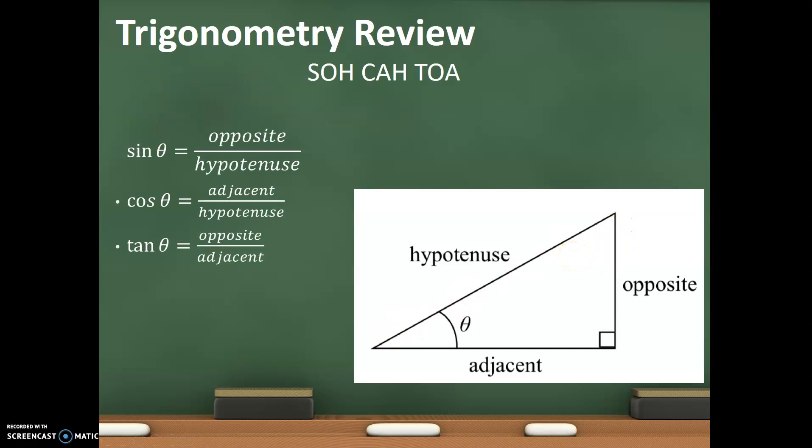Well, then we have our trigonometry review of SOHCAHTOA. The sine of the angle is equal to opposite over hypotenuse. Cosine of my angle is adjacent over hypotenuse. And tangent is opposite over adjacent. If you don't know these already, write them down, please. Now, here's what's cool.